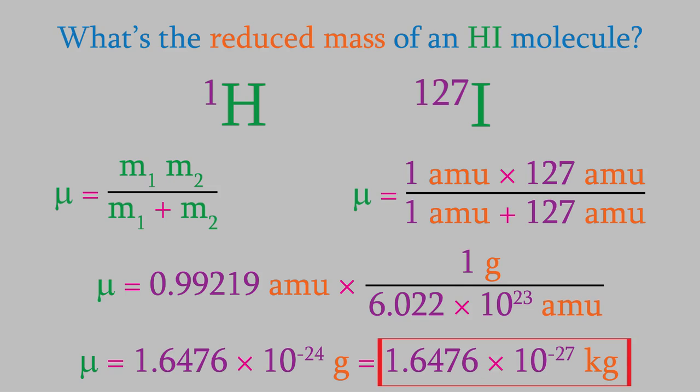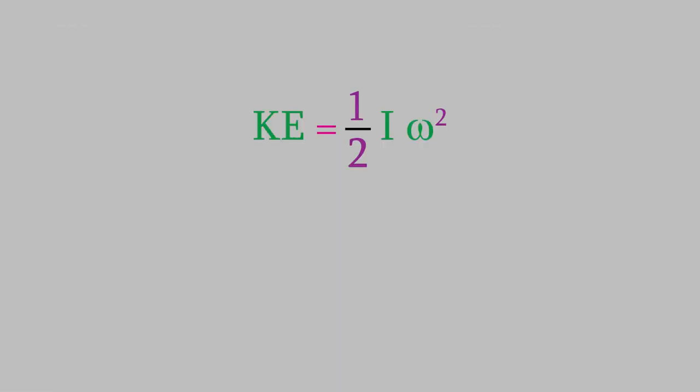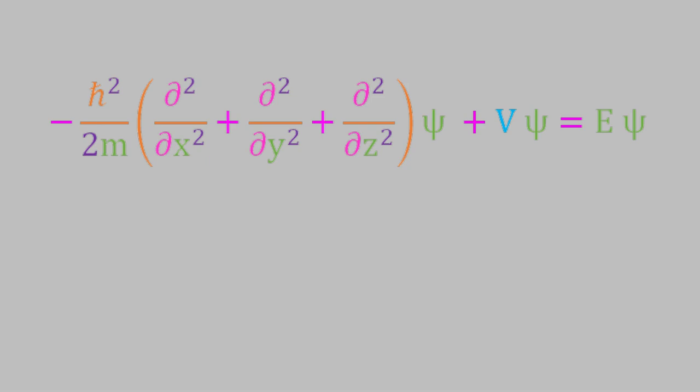But there's a slight problem with the equation that we saw for the energy of a rigid rotor. This equation comes from classical physics, which assumes that a system can have any value for its energy. But we know from our discussions in the first video of this course that the energy of a system is quantized. In order to get a more realistic picture of the energy of a rigid rotor, we therefore need to use the equations of quantum mechanics. As we mentioned earlier, that means we need to use the Schrodinger equation. We can simplify the Schrodinger equation a bit because we know that rotational energy is a form of kinetic energy. So the potential energy term drops out, and we're left with this.